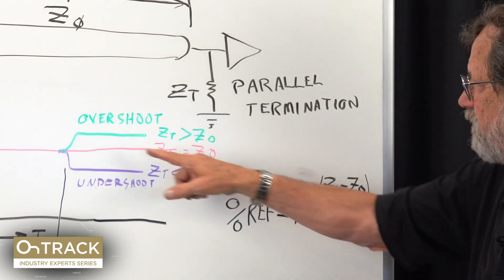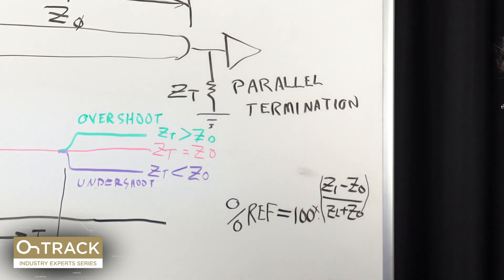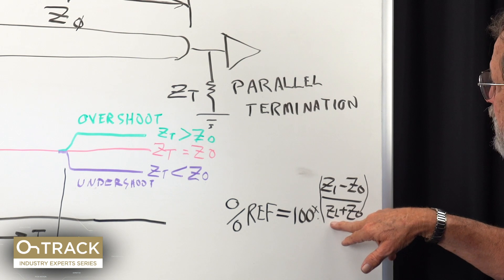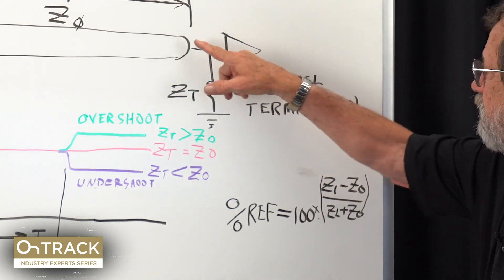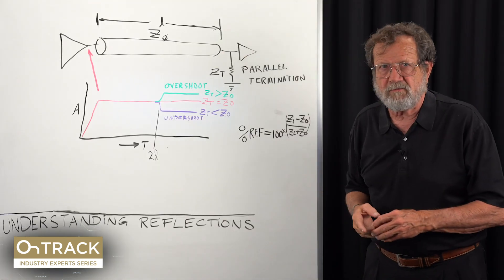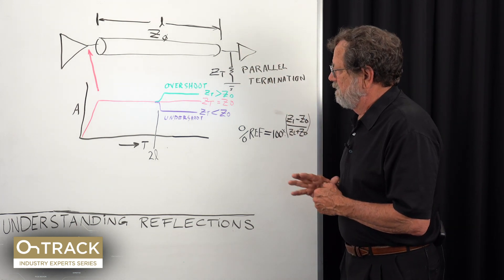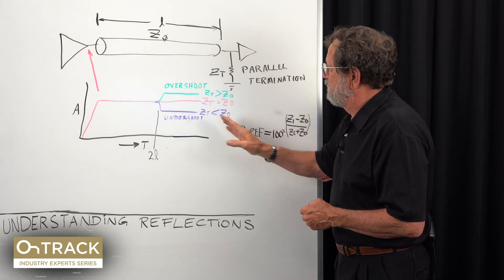That's the green one, and that's what we want with modern logic. The opposite—when Z_T is less than Z_0—we get undershoot, which we don't want. Now, I illustrated this at the end of a transmission line, but what I show you here could occur if the impedance changed in the middle.